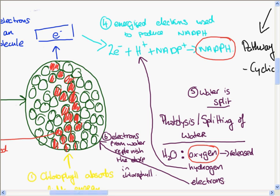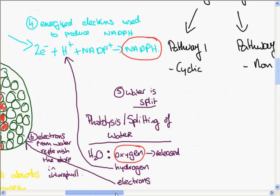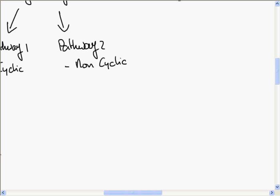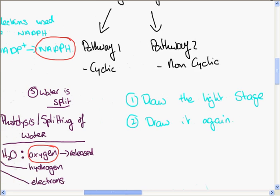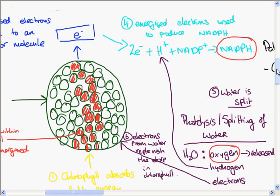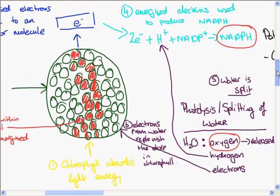And that is the light stage. So there are two vodcasts on the light stage, and this is what I suggest you do with them. So watch the two vodcasts. And then draw them out. So draw the light stage. Pathway one and pathway two. Maybe draw them both on one big sheet of paper. The second thing I suggest you do is draw it again. And keep drawing it until you can draw it from memory.